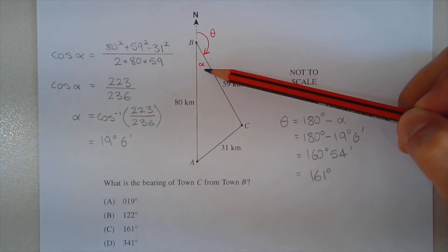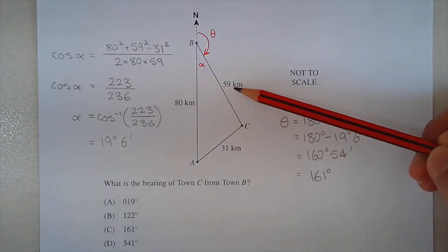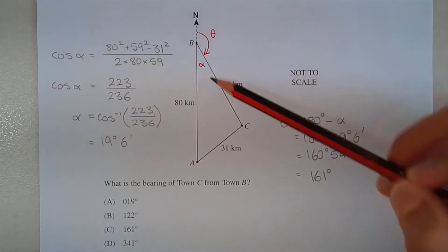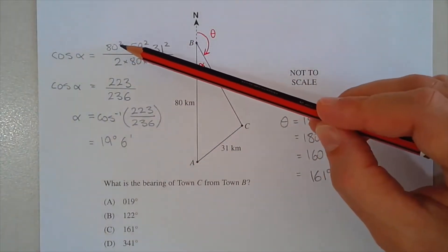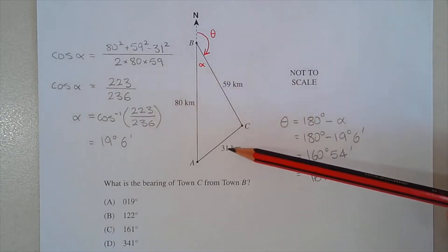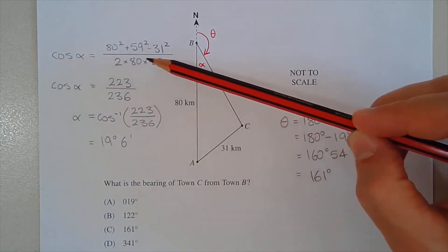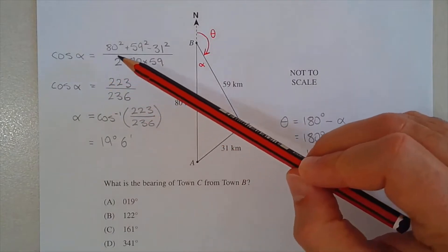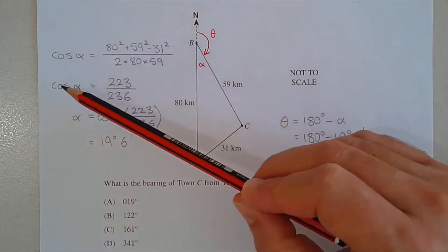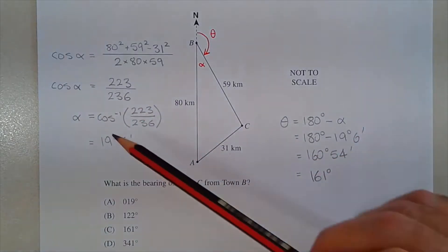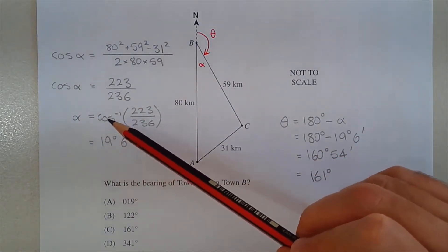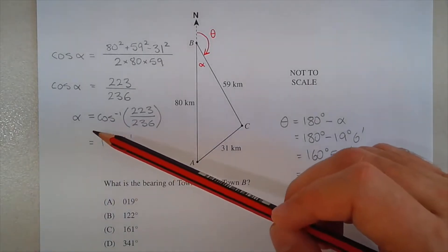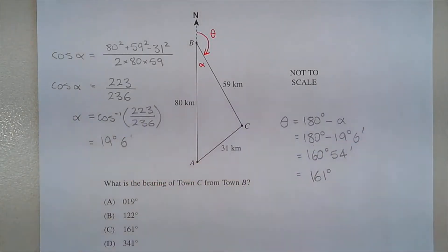To find angle alpha we use the cosine rule, since we have three known sides but no known angle. So cos alpha equals (80² + 59² − 31²) / (2 × 80 × 59), which simplifies to 223/236. Taking the inverse cosine, alpha equals 19 degrees and 6 minutes, correct to the nearest minute.